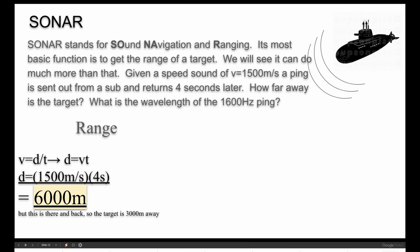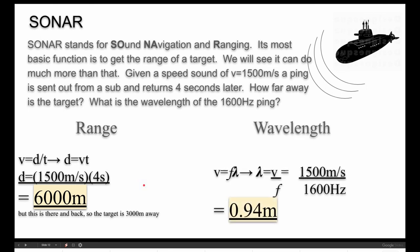Now the range of the target is easy. Just distance is V times T. The thing that's moving is the sound wave. 1500 meters a second for four seconds. The sound wave traveled for 6,000 meters. Now I said the ping came back after four seconds. This is a there and back trip. So the wave went to the target and came back to you. So the enemy sub is 3000 meters away. In terms of the wavelength, we would choose any one of these formulas here that has lambda in it. And we get lambda is equal to V over F. Put in our numbers and the wavelength of the sonar is 0.94.